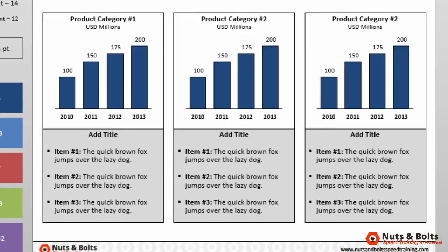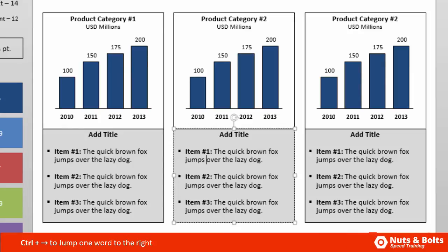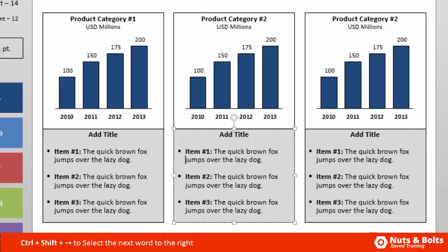That covers navigating blocks of text using Home and End. Some other good shortcuts involve your arrow keys. Using arrow keys left or right moves one character at a time, but combined with Control, Control+Right Arrow jumps one word at a time, and Control+Left Arrow jumps one word to the left. Control+Shift+Right Arrow selects an entire word at a time, and this also works with the left arrow key: Control+Shift+Left.